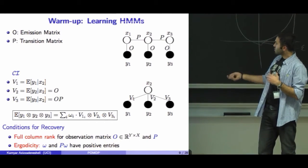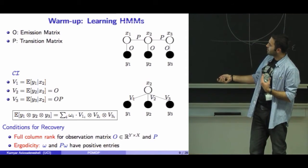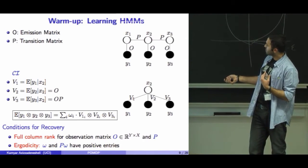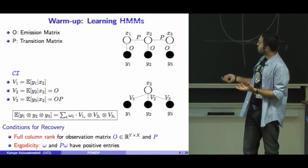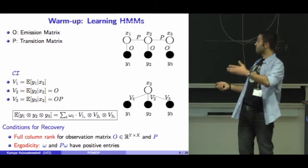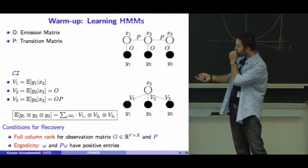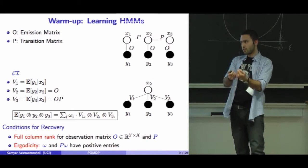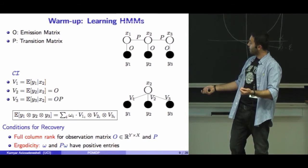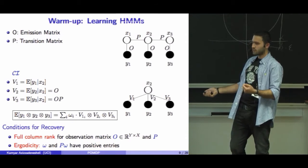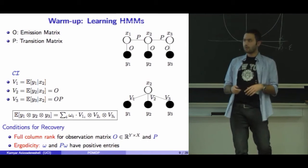To be able to learn the model, we need to satisfy some conditions: V1, V2, and V3 should be conditionally independent given X2. This translates to the emission matrix O being full column rank, the transition matrix being full column rank, and the hidden Markov chain being ergodic.